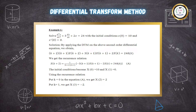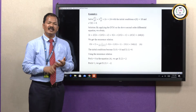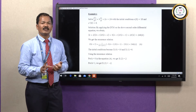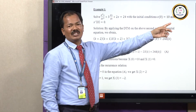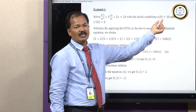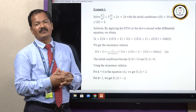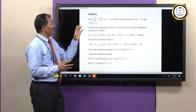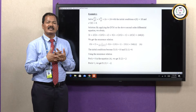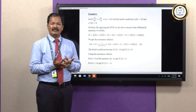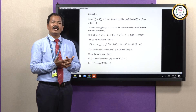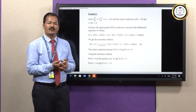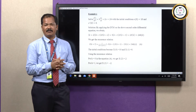Example: solve the second order differential equation (D-squared plus 3D plus 2) x of t equals 24, which is a second order linear differential equation with constant coefficients, along with the initial conditions x of 0 equals 10 and x-prime of 0 equals 0. This equation can be solved by various methods — analytical methods and semi-analytical methods. The differential transformation method is one of the semi-analytical, or power series solution, methods.